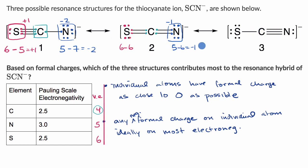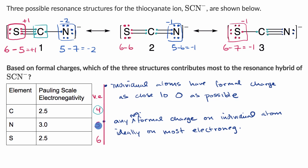In the third resonance structure, sulfur has seven outer electrons hanging out. Neutral sulfur would have six valence electrons, so six minus seven gives one extra electron — a negative one formal charge on sulfur. Carbon still has four outer electrons hanging out, typical of neutral carbon's valence electrons, so no formal charge. Nitrogen has five outer electrons, equivalent to a neutral nitrogen's valence electrons, so five minus five gives no formal charge.